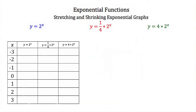So let's look at this a little bit closer. Here we have three functions: y is equal to 2 to the x, y is equal to 1 fourth times 2 to the x, and y is equal to 4 times 2 to the x. Our y is equal to 2 to the x is going to be our parent function — you can think of this as our y is equal to b to the x. For y is equal to 1 fourth times 2 to the x, our 1 fourth is going to be our a — that's a fraction. And then our 4 in our third function is going to be our a that's greater than 1.